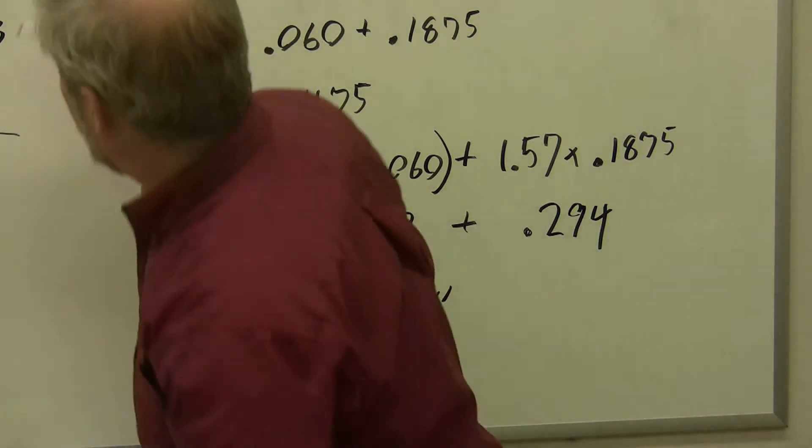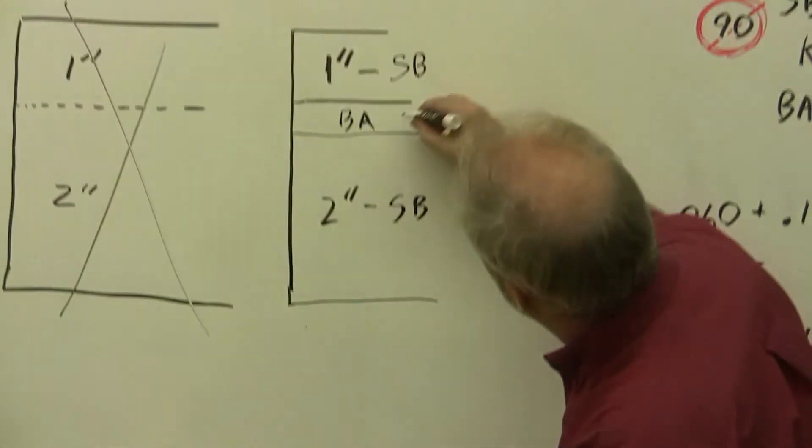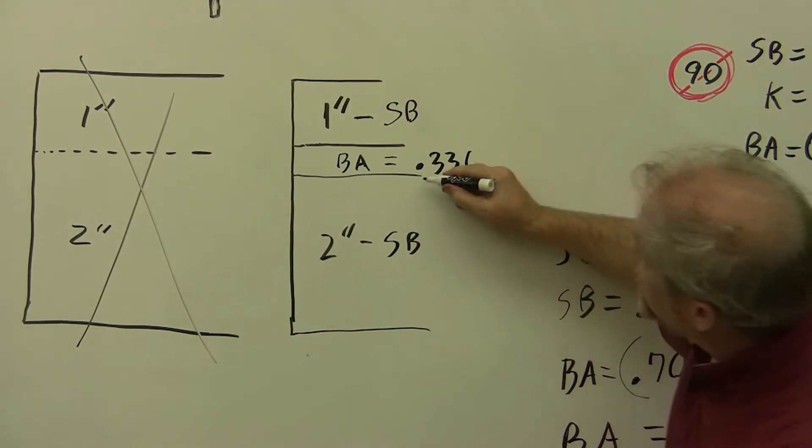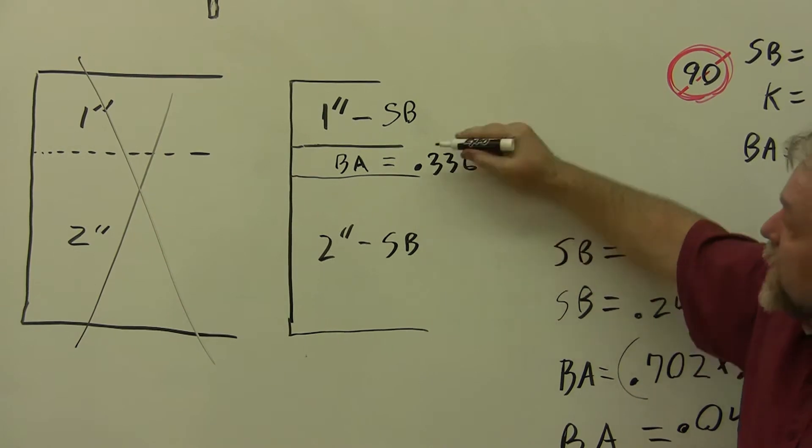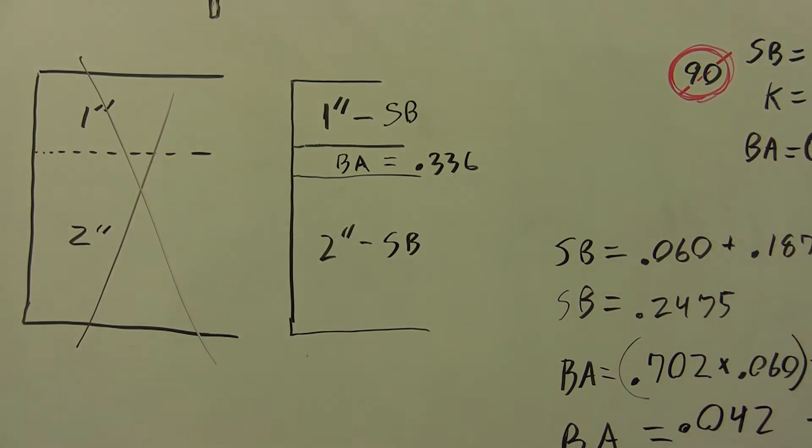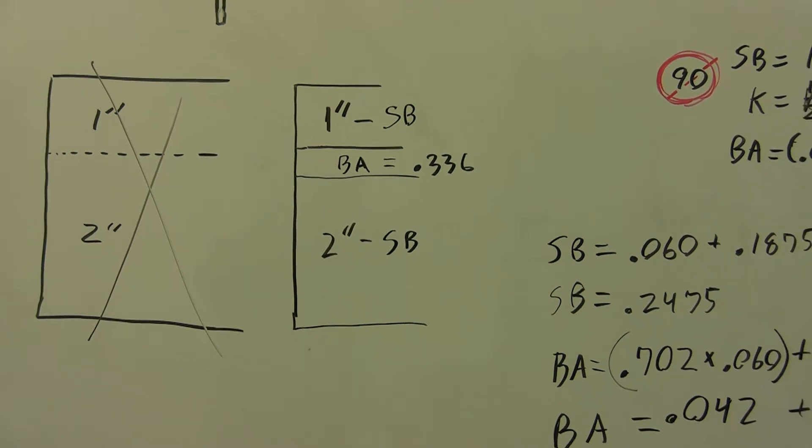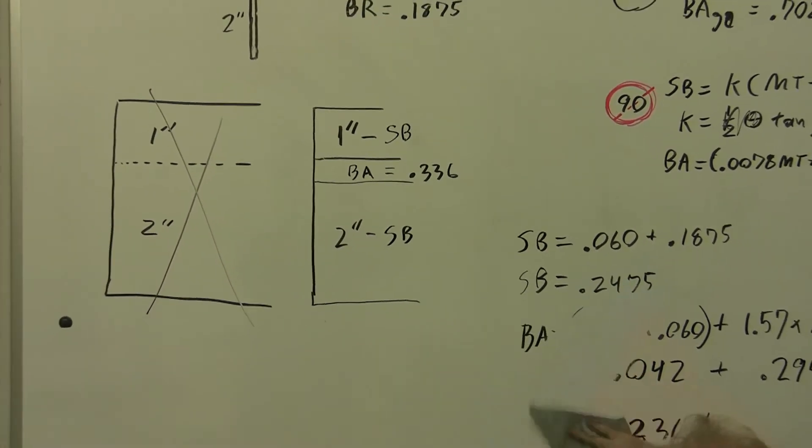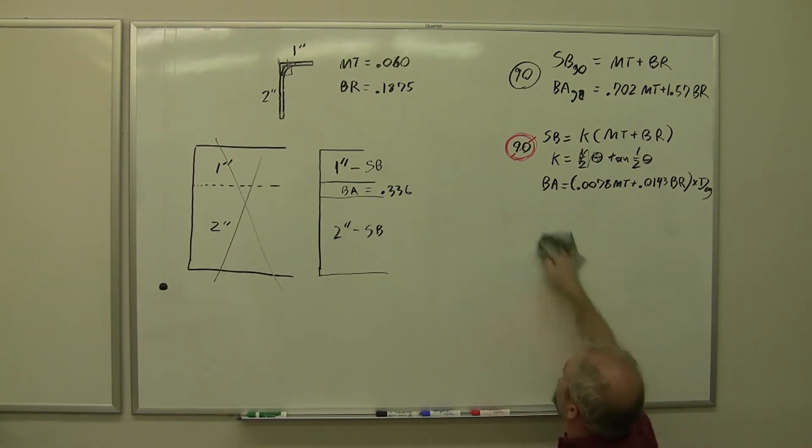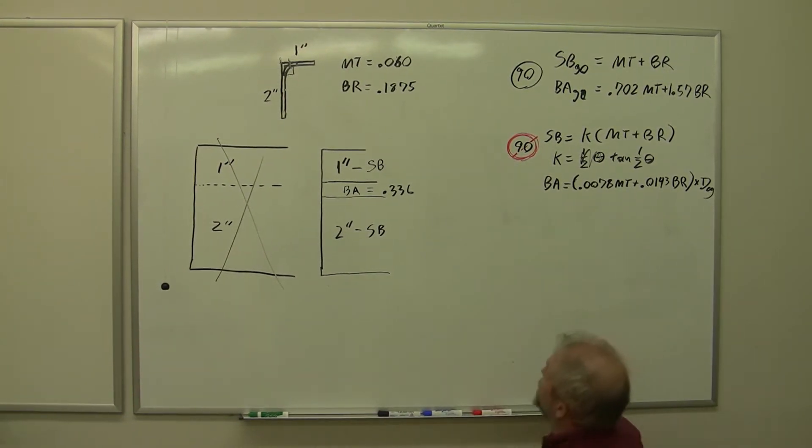Now we're going to write this over here, because that's what we were calculating, 0.336. That's the distance from this bend tangent line to this bend tangent line. Now, we need our setbacks. Luckily, we have a formula for setback. And we already calculated it, didn't we?